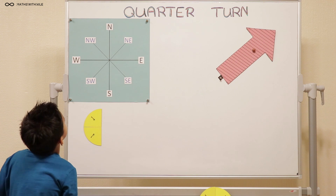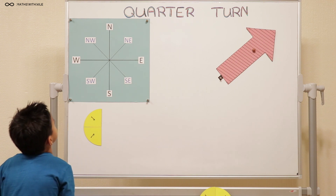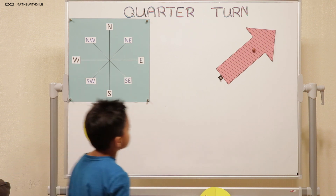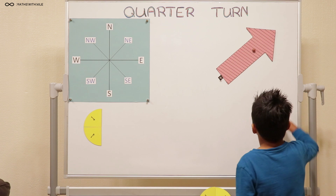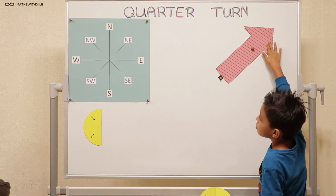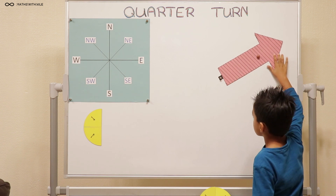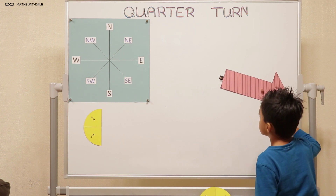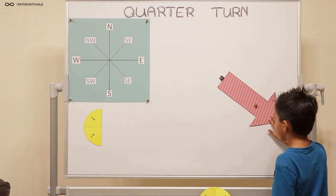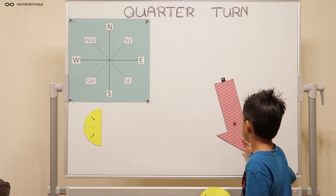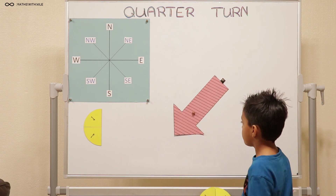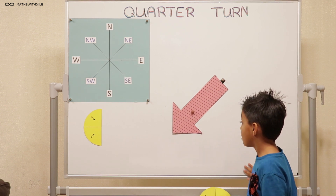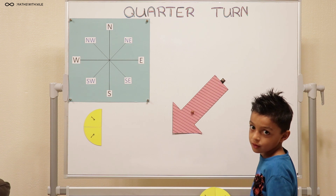So that's your quarter turn. Let's leave it on north-east and go over to your arrow. Can you make two quarters turn clockwise? Two quarters turn clockwise — tell us when you count the first quarter. One quarter. One quarter there? And then? Two quarters. So two quarters turn is the same as a half turn.